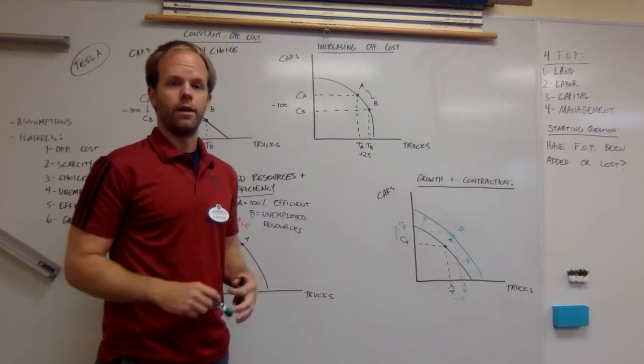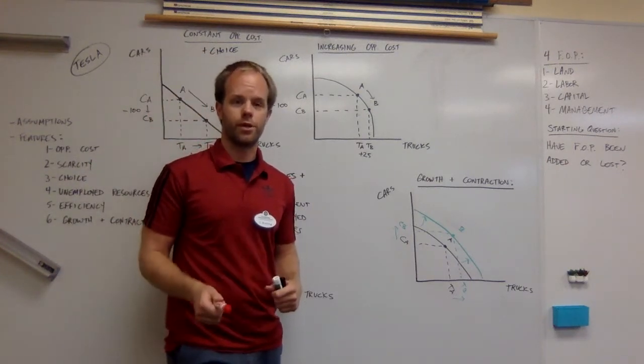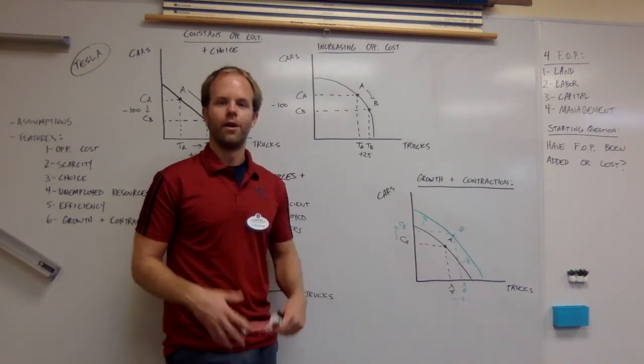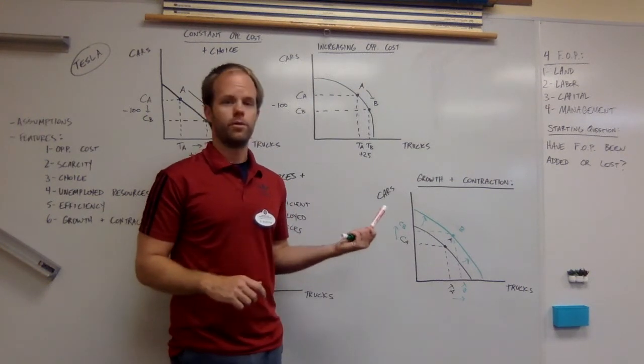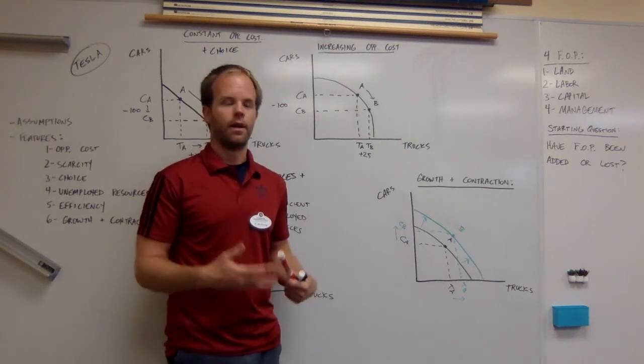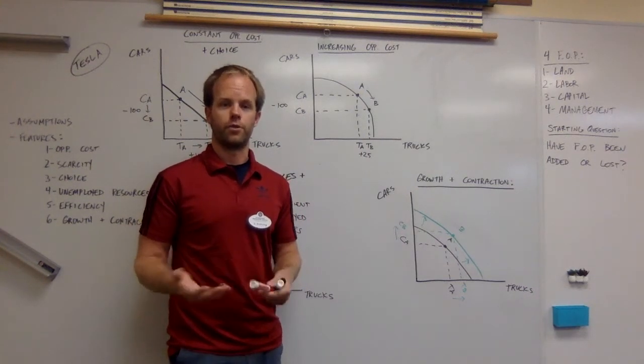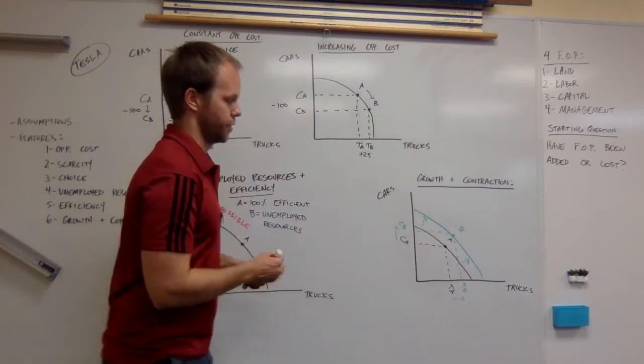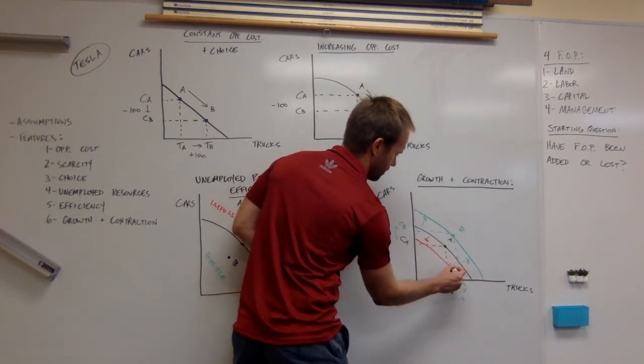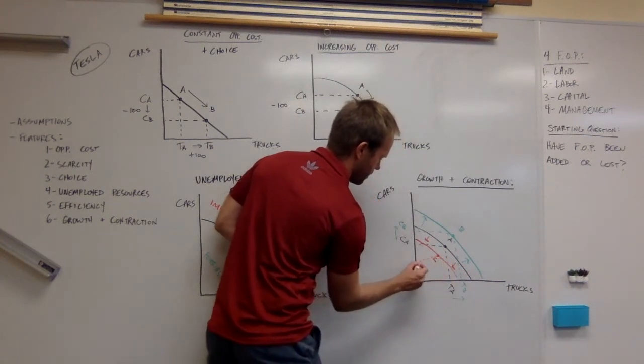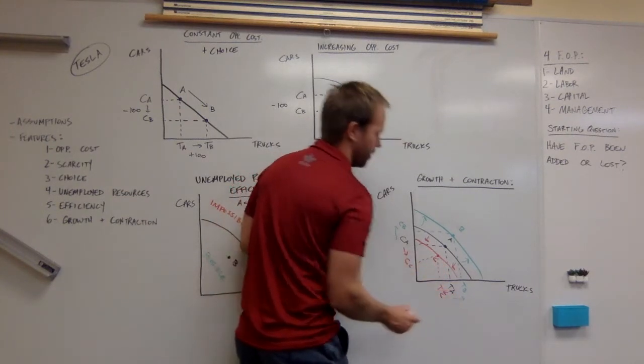Sometimes businesses, especially during a recession, which we're kind of dealing with right now, if consumers stop buying the products of a business, that business will have to lay off some workers. They'll have to maybe sell some of their equipment and sell some of their real estate. If a business has factors of production that get damaged for some reason, or they sell them off, or they just remove them, then we're going to do the opposite shift. The production possibility curve can shift inward. We're going to call that point C. Cars produced at point C, trucks produced at point C, and a decrease in production of both.